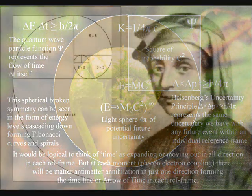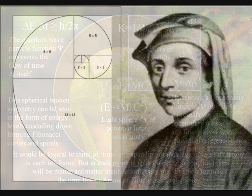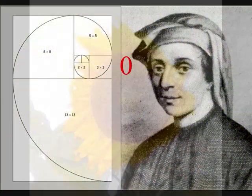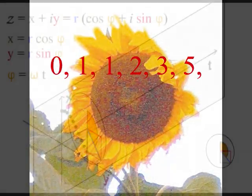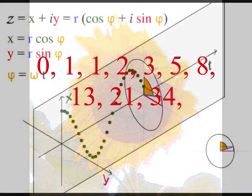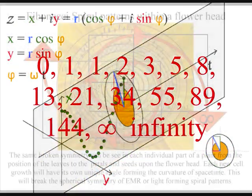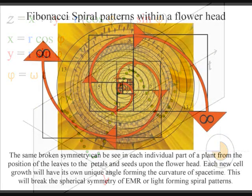In this theory, we have the Fibonacci numbers in nature, not because of economy of growth or space, but because time and space is being formed by the geometry, and therefore the mathematics, of this dynamic process.